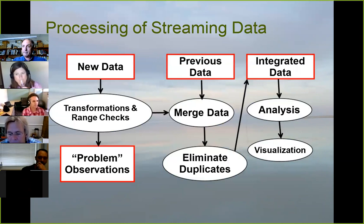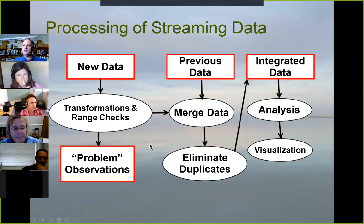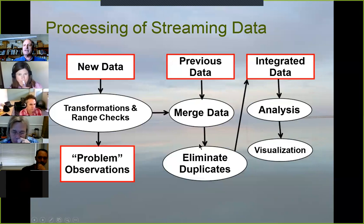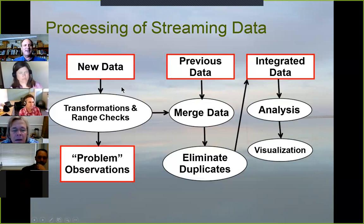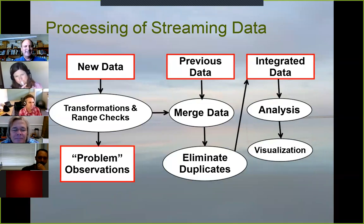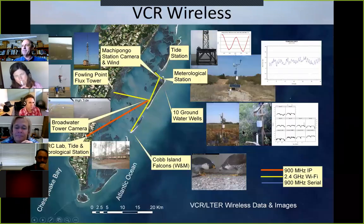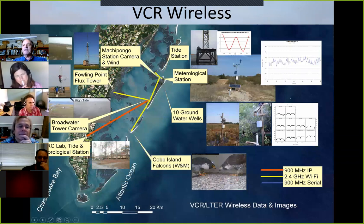For our streaming data — coming in on an hourly basis or in some cases every 10 seconds — the general process is: you've got your new data, you've got your old data, you merge those together and eliminate any duplicates. I find it much easier to accept the fact that somebody is going to give you the same data file twice and be prepared for it, rather than trying to guarantee that new and old data never overlap. Starting in 2002, we established a wireless network out to our barrier islands.